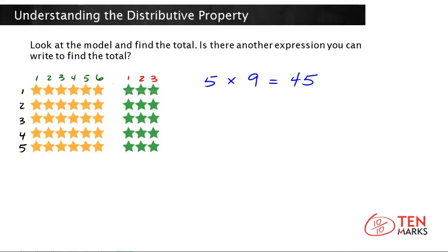What you can do is multiply five times six — I'll write that under this model — and add this to five times three. These two arrays can be added together and you will get the same total as when you multiplied five times nine. Remember, nine can be split into the sum of two smaller numbers: six plus three. So all we did was break up the number in each row, and now we can write an equivalent expression.